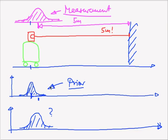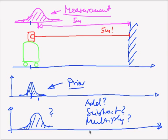What shall I do? Shall I add those distributions, or subtract, or multiply, or divide, or do I have to do again a convolution?